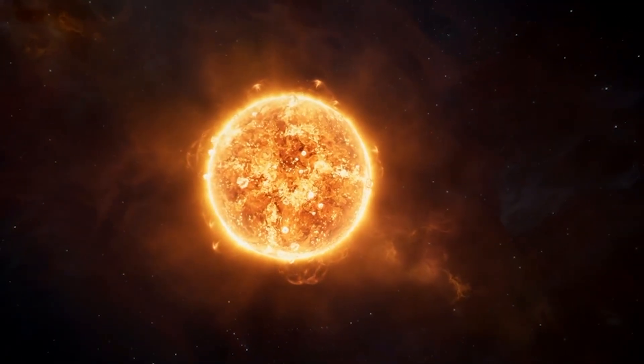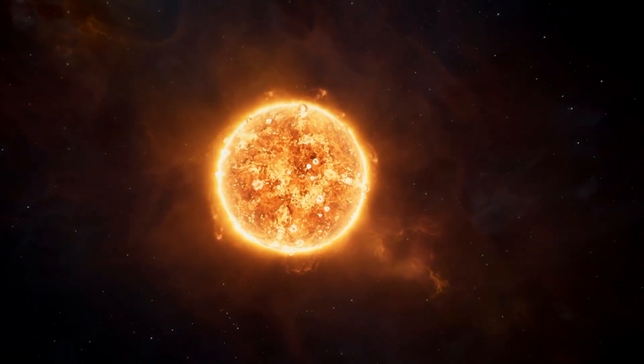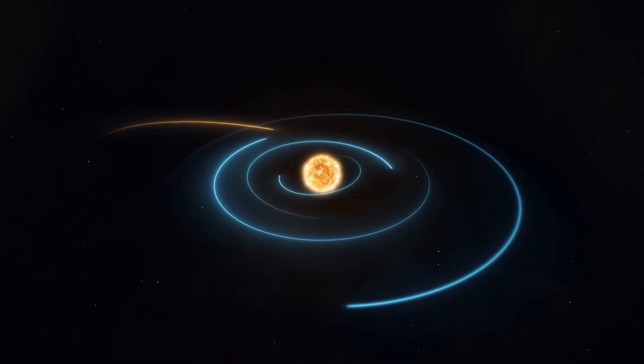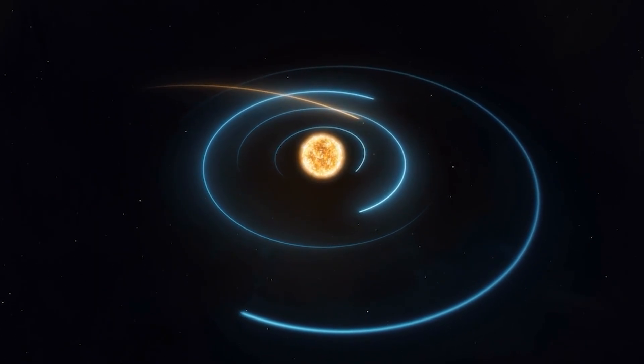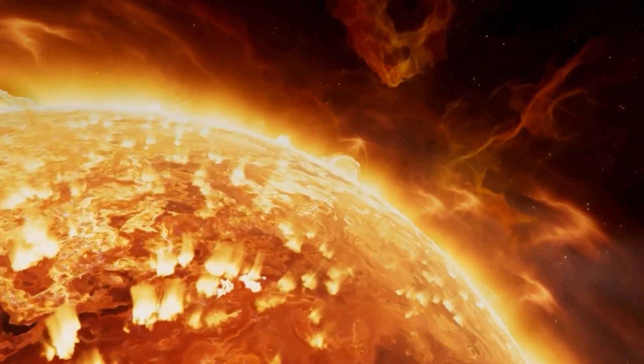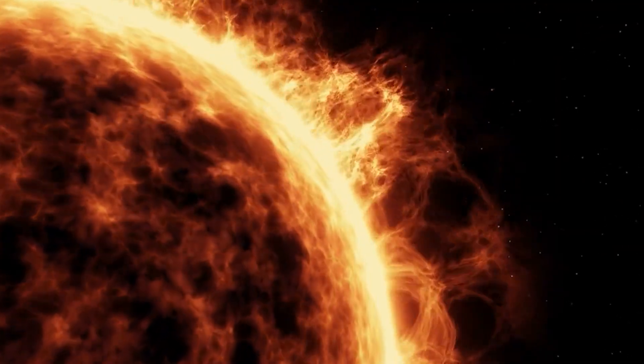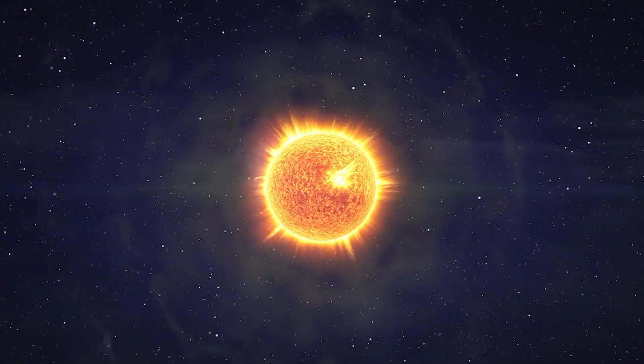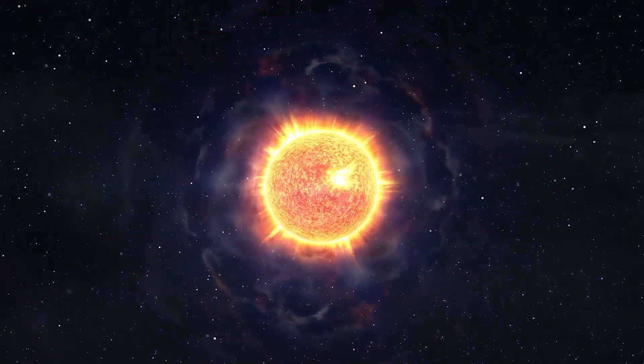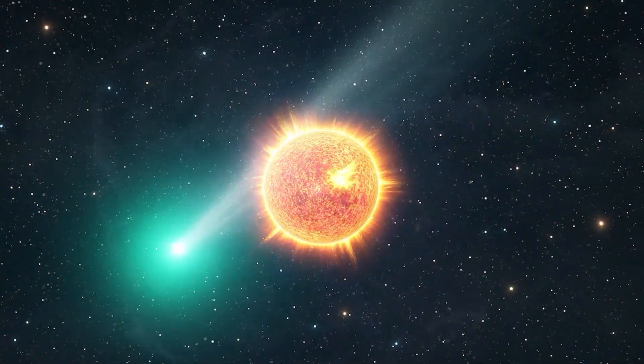But then, less than 48 hours after that, our own Sun seemed to join the performance. From a sunspot group that was almost perfectly aligned with the position of Comet Swan, the Sun unleashed the biggest solar flare seen in months. It wasn't just a random solar burp, it was a directed burst of energy, and it launched a massive coronal mass ejection straight out into space, on a direct collision course with Comet Swan.